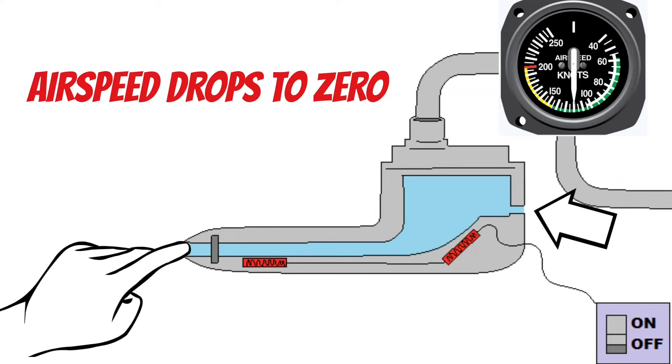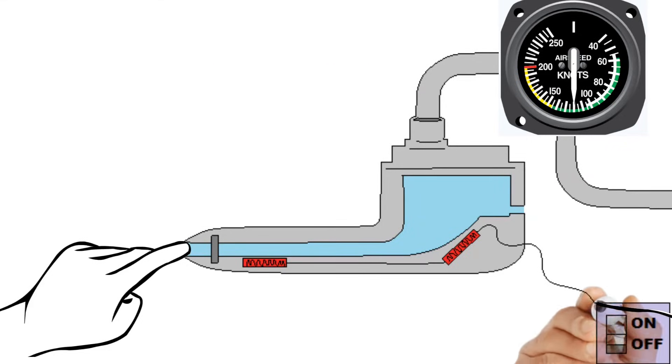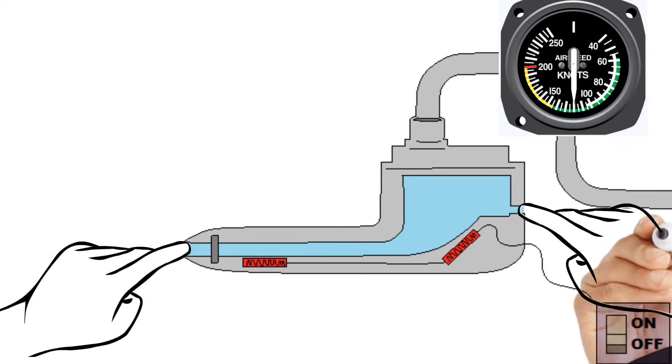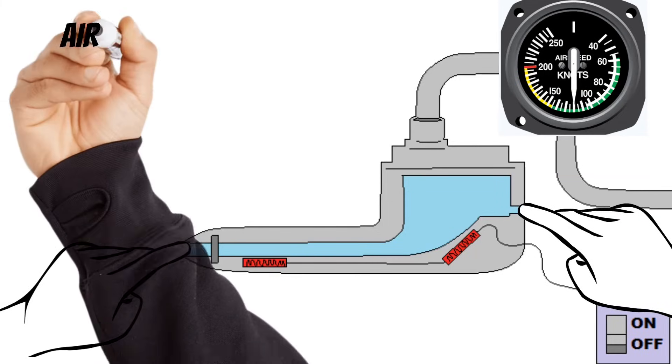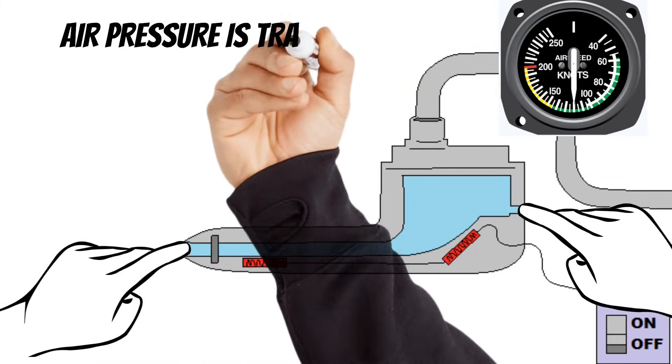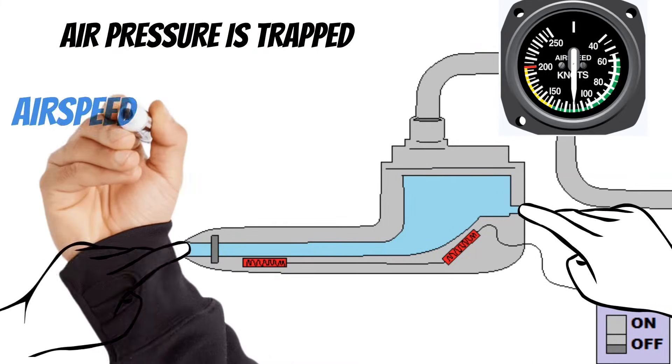The second possibility is if the front of the pitot tube and the drain hole gets clogged. If this happens, any air pressure in the pitot system will be trapped and your airspeed indicator is frozen at the last indication it was giving you.